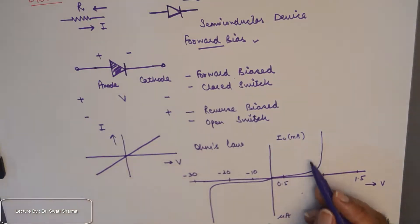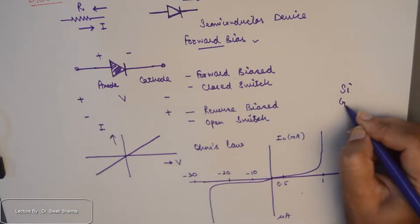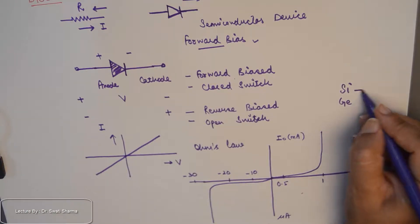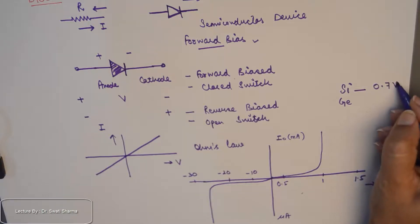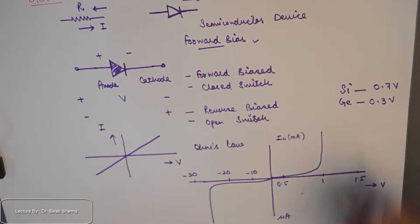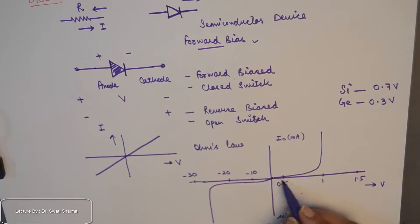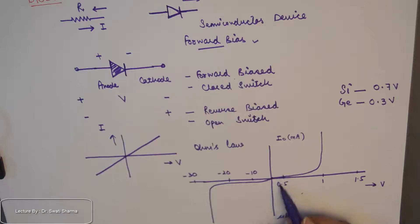Since a diode is a semiconductor device, the semiconductor material used for fabrication is either silicon or germanium. The threshold voltage of silicon is around 0.7 volts, whereas that of germanium lies around 0.3 volts. This means that until a voltage of 0.7 volts is applied across a forward-biased silicon diode, it will not allow the flow of current — in other words, below the threshold voltage the diode acts like an open switch.